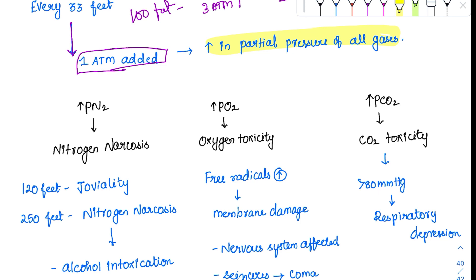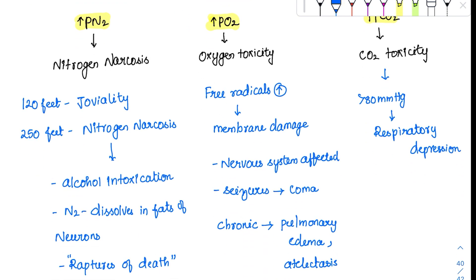Among all the gases, nitrogen causes a severe deleterious effect because its proportion is around 79%. There will be an increase in PN2, PO2, and PCO2 — all of them are increasing. If there is an increase in PN2, it will cause nitrogen narcosis. Narcosis is a term we are all familiar with — it acts like a narcotic drug.